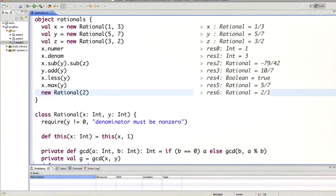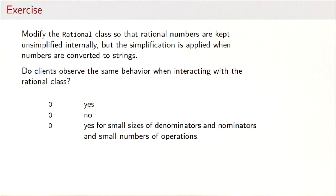So let's do an exercise. Modify the rational class so that all rational numbers are kept unsimplified internally, but the simplification is applied when numbers are converted to strings. When you've done that, think about whether clients of the new class rational would observe the same behavior when interacting with it. Possible answers are yes, no, or yes for small sizes of denominators and numerators and small numbers of operations.